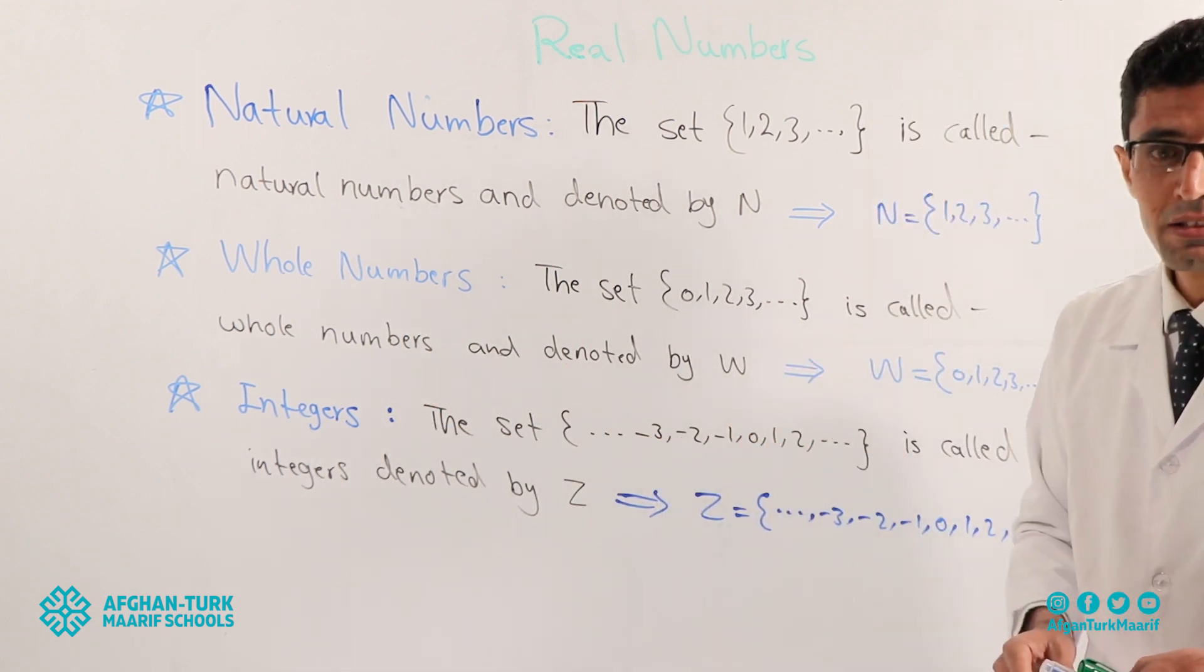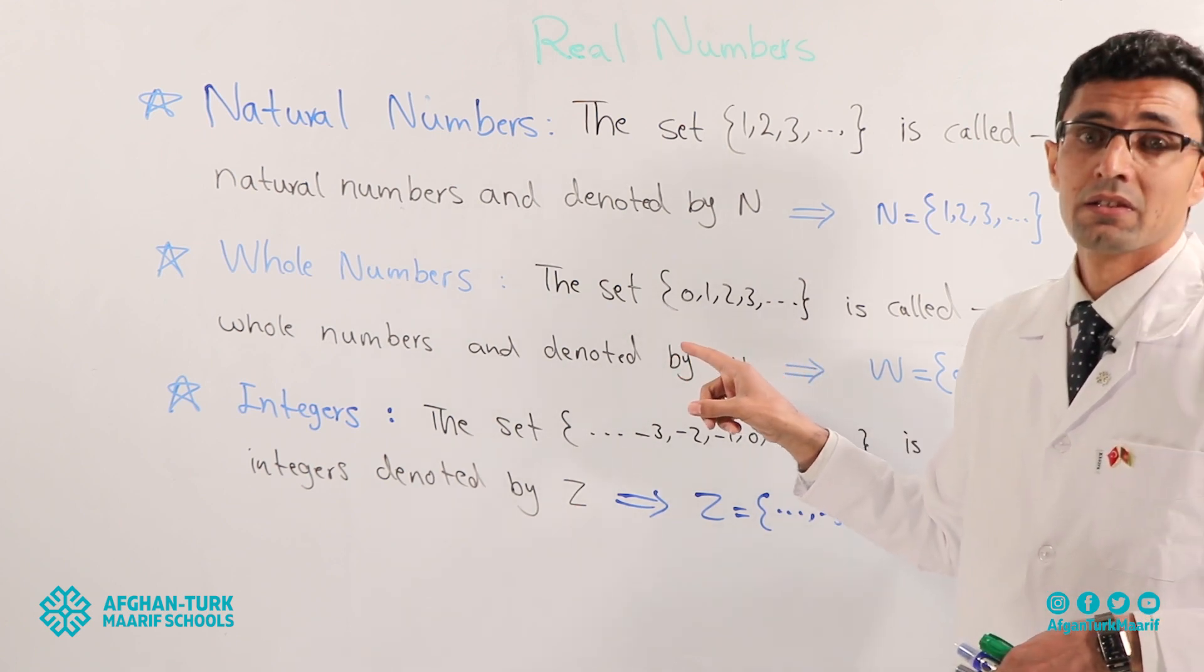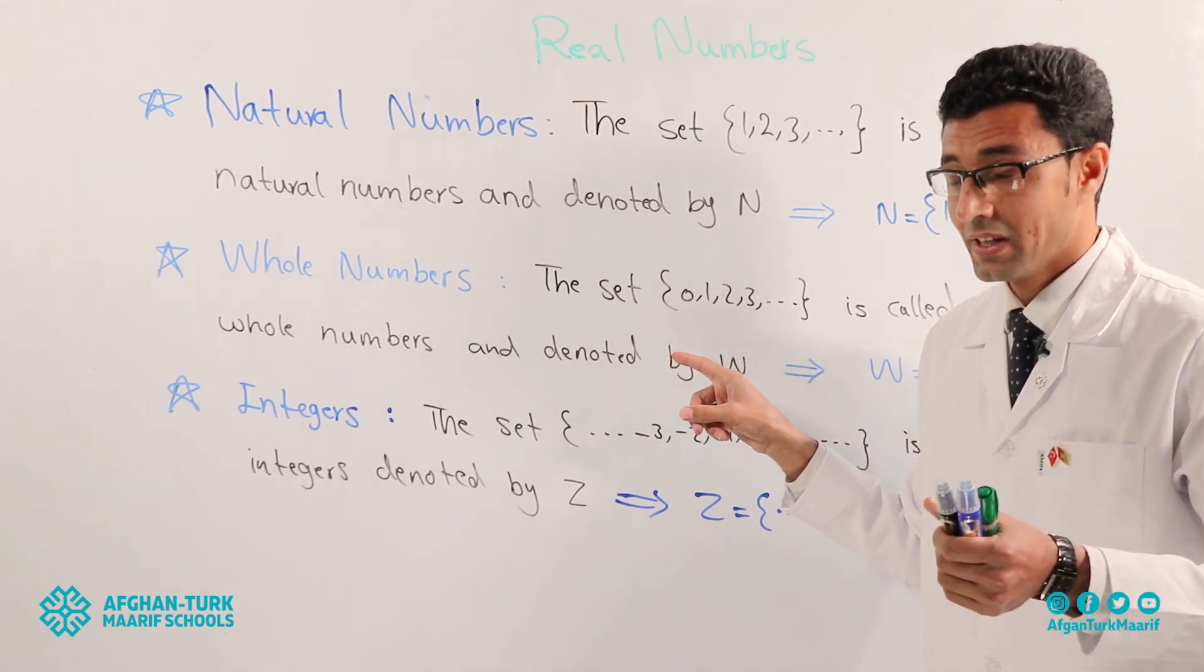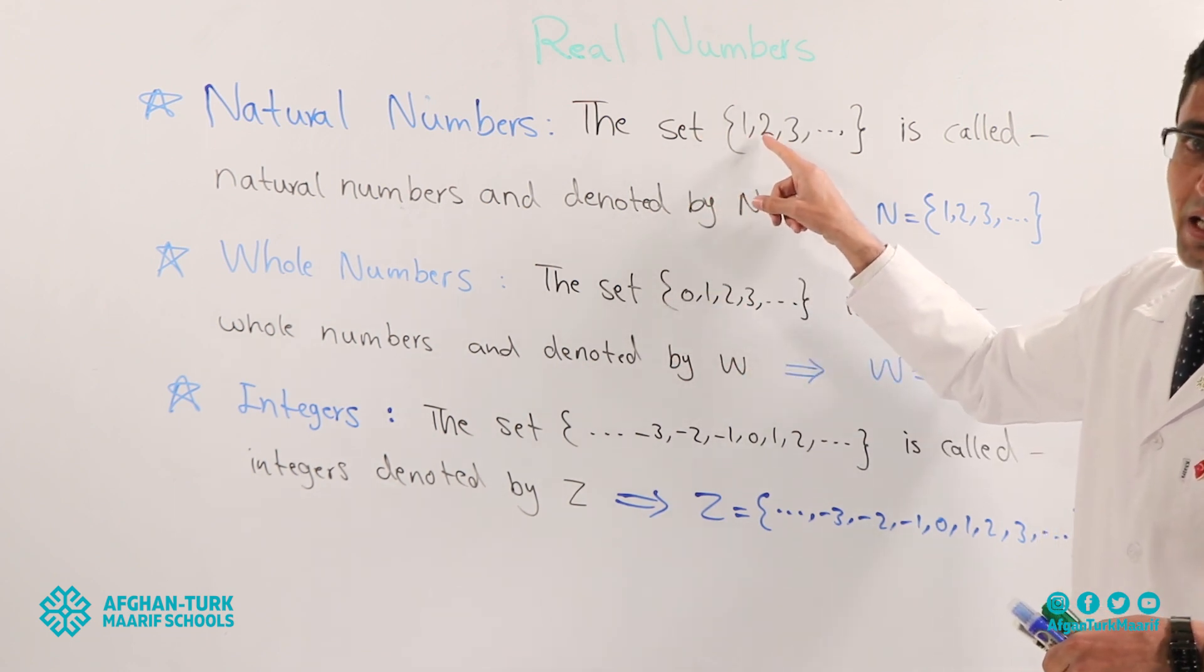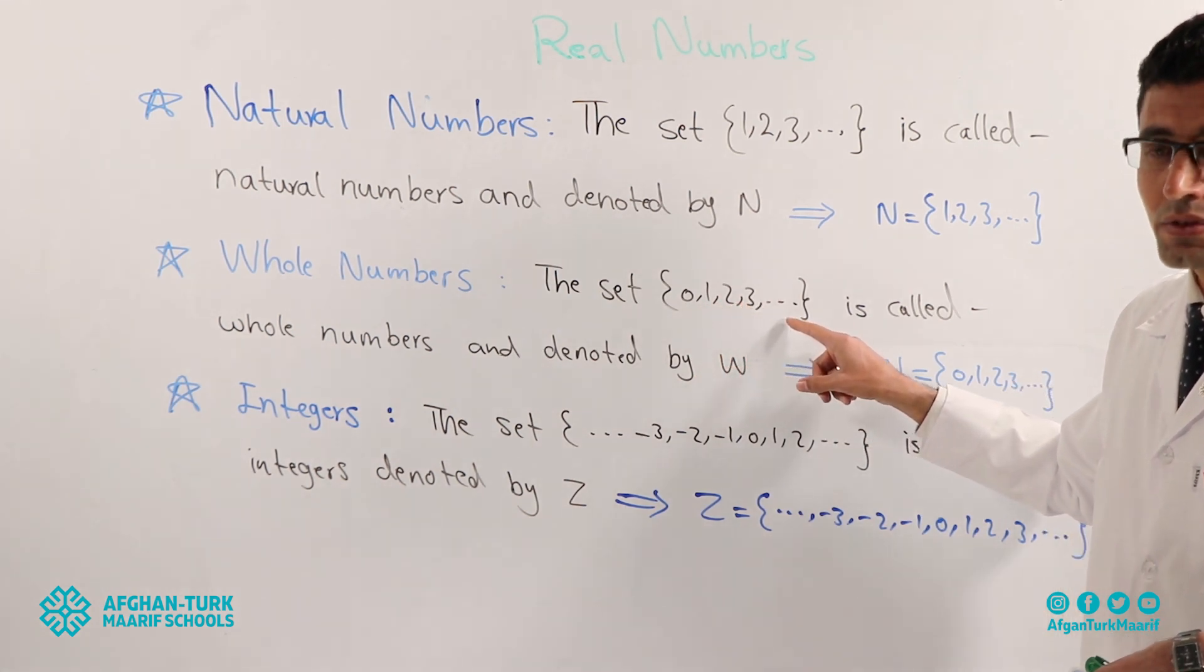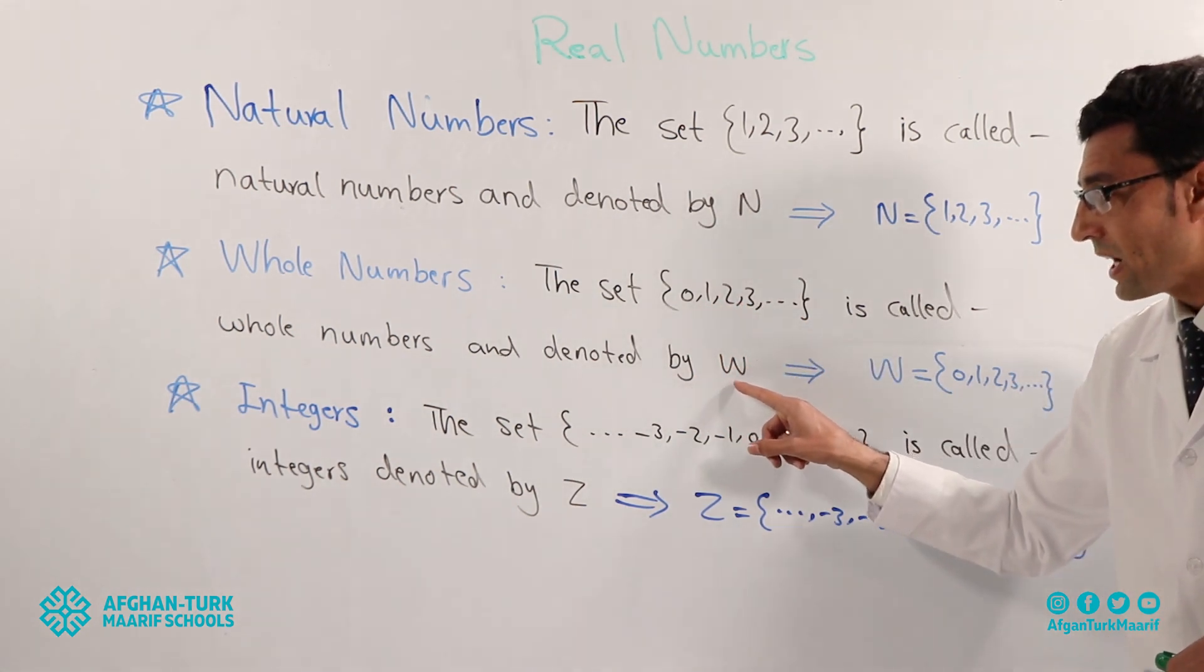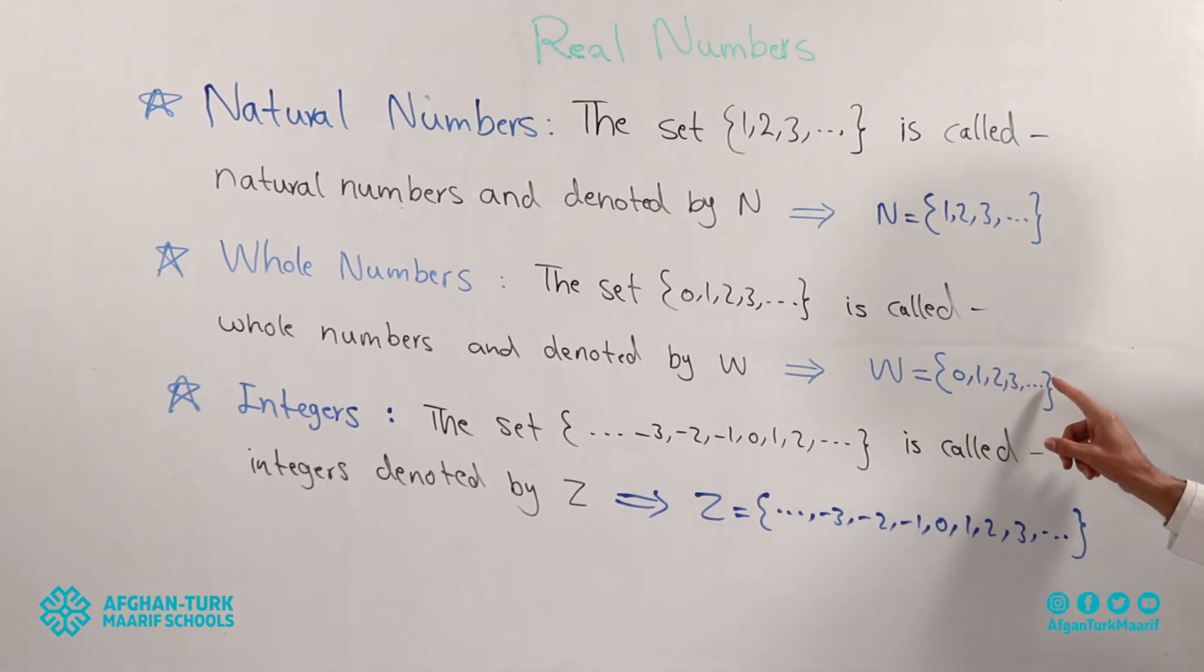And denoted by what? By W. It means it starts from what? From zero. What is the difference between natural number and whole number? Natural number starts from one, two, three. And whole numbers start from zero, one, two. It denotes by what? By W. W is equal to zero, one, two, three dot.